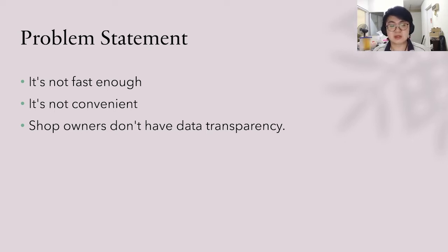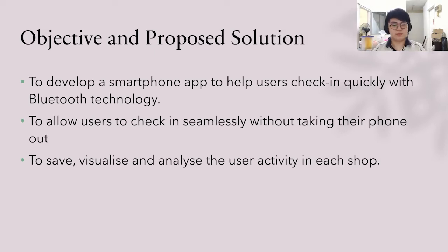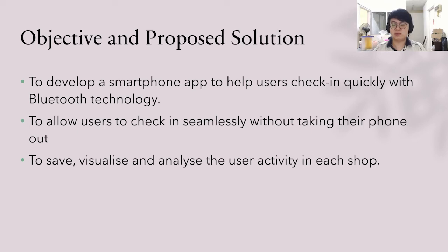The third problem is that shop owners don't have data transparency. If everyone checks in to a shop, the data collected is not transparent to the shop owner, so the shop owner can't see the user activity. The first objective is to develop a smartphone app to help users check in quickly with Bluetooth technology. The user's phone will scan for the shop's Bluetooth signal to check in automatically. The second objective is to allow users to check in seamlessly without taking their phone out, using a background app. The third is to save, visualize, and internalize user activity in each shop, so the shop owner can allocate more resources when user activity is highest.